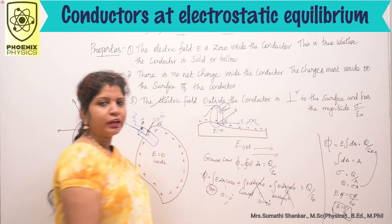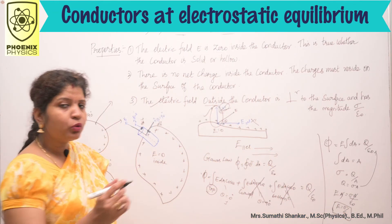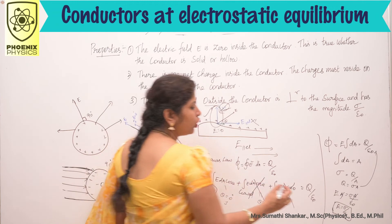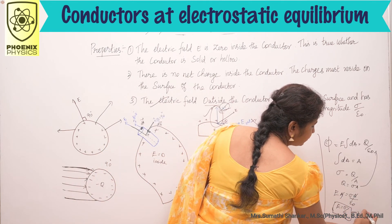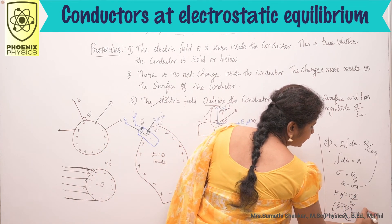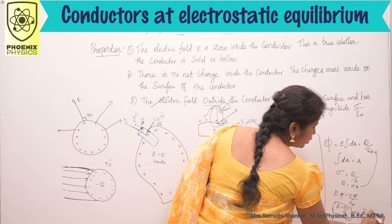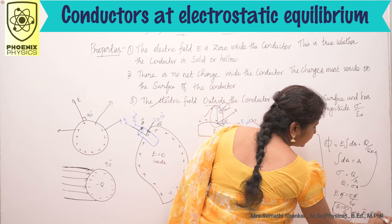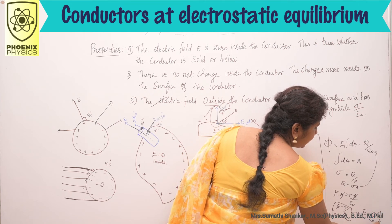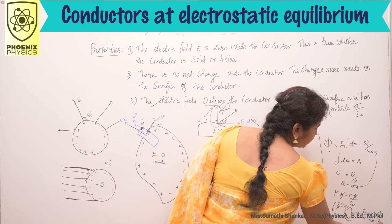This is the magnitude of the electric field. In vector format: E⃗ = (σ/ε₀) n̂, where n̂ is the unit vector normal to the surface.